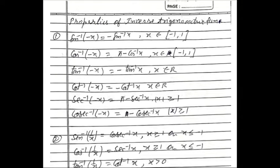Second: cos⁻¹(−x) = π − cos⁻¹x, for x in [−1, 1]. Also, tan⁻¹(−x) = −tan⁻¹x, for x in R. And cot⁻¹(−x) = π − cot⁻¹x, for x in R.